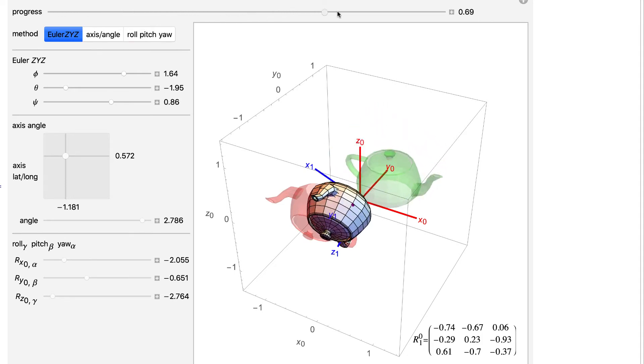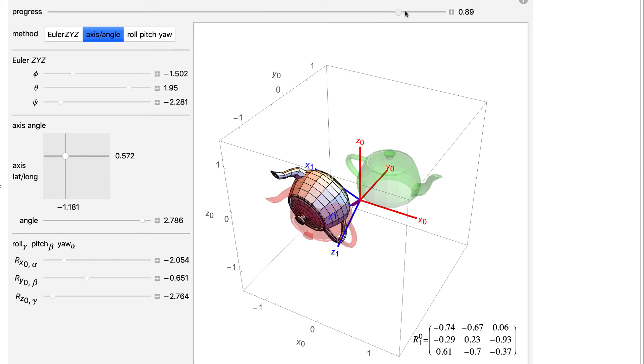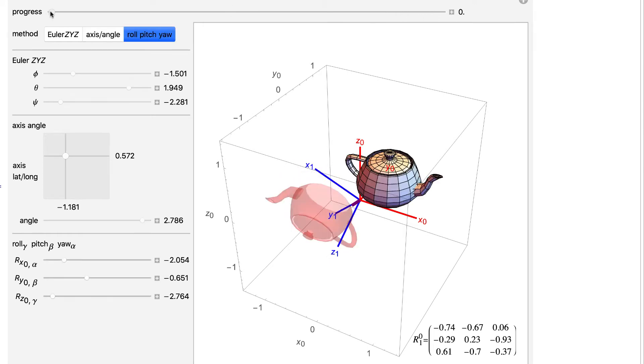There are many ways to parameterize or fully specify a rotation matrix. Today, I'll show three methods: Euler angles, axis angle, and roll-pitch-yaw.